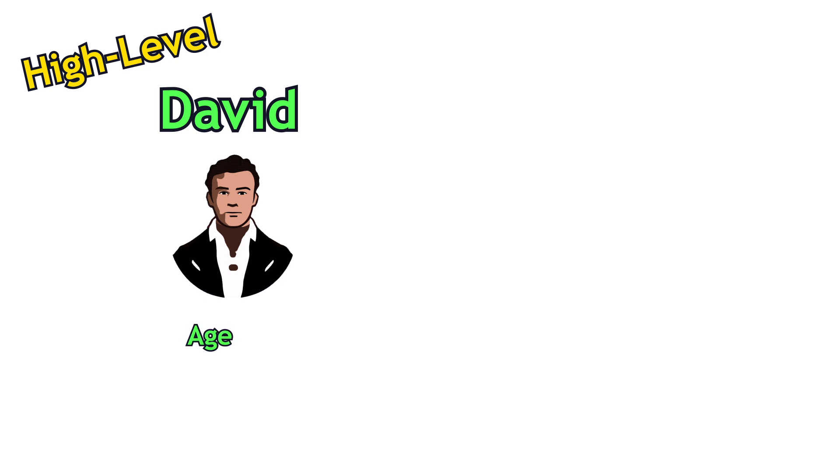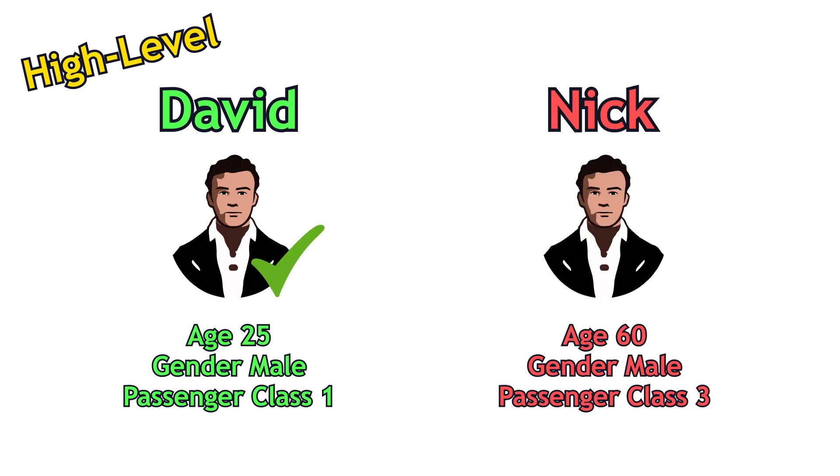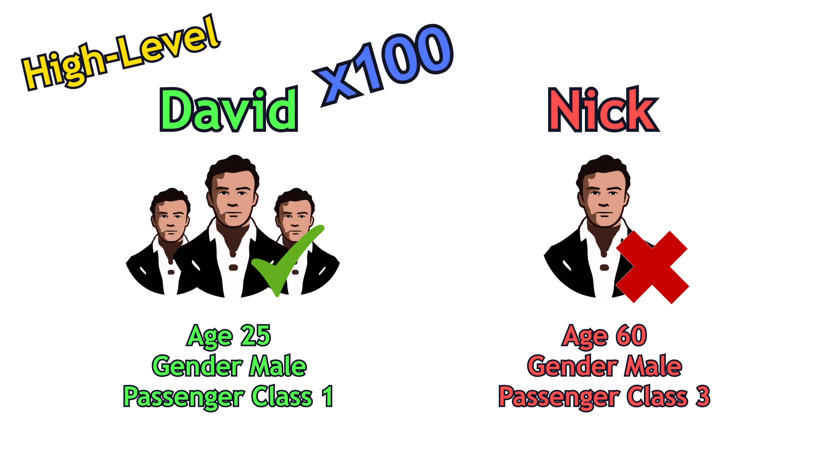Let's first understand how it would work at a high level. David has the following characteristics and survived the accident. Nick has different characteristics and did not survive the accident. Imagine 100 other people have very similar characteristics to David and another 100 are very similar to Nick.